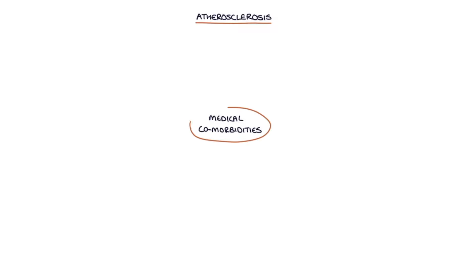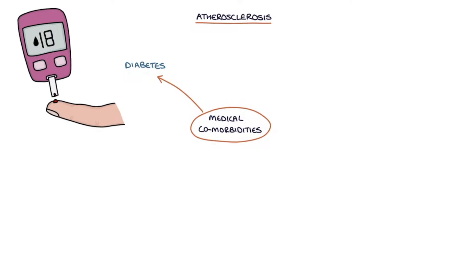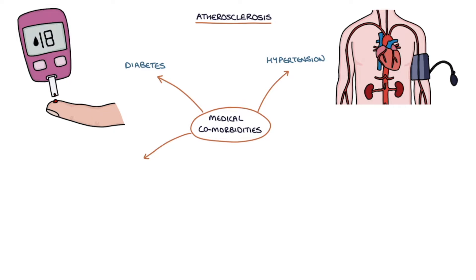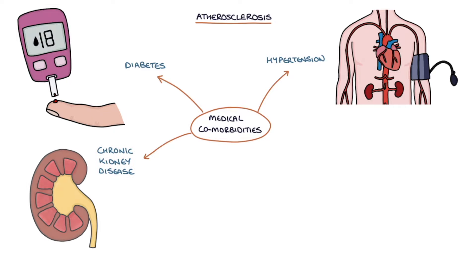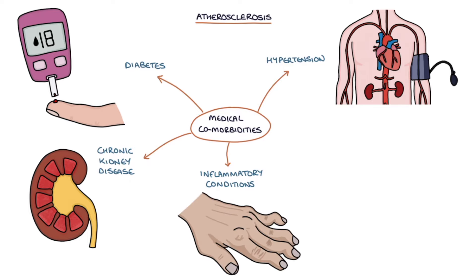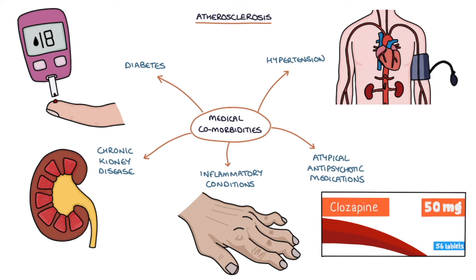Let's talk about medical comorbidities. Medical comorbidities increase the risk of atherosclerosis and should be carefully managed to minimise the risk. These include diabetes, hypertension, chronic kidney disease, inflammatory conditions such as rheumatoid arthritis, and the use of atypical antipsychotic medications, for example in schizophrenia.